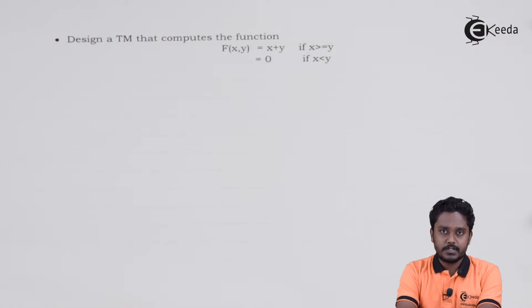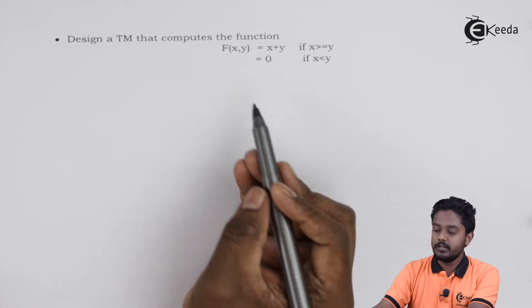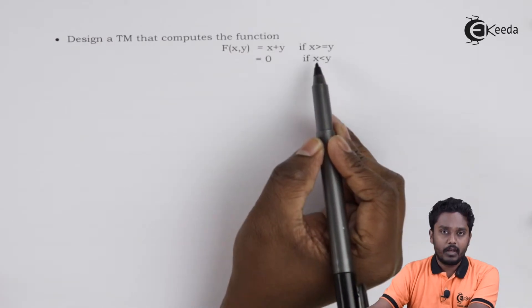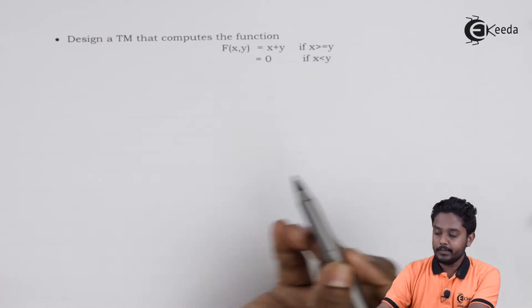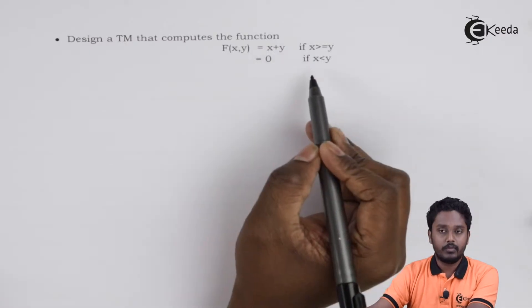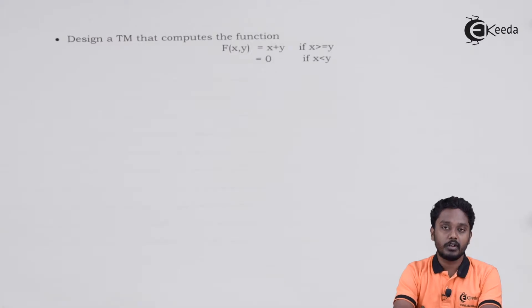Over here, let us see the question first. We have to design a Turing machine which will do two things. First, if x is greater than or equal to y, then it will do the operation of addition. If x is less than y, then it will output 0 onto the tape.